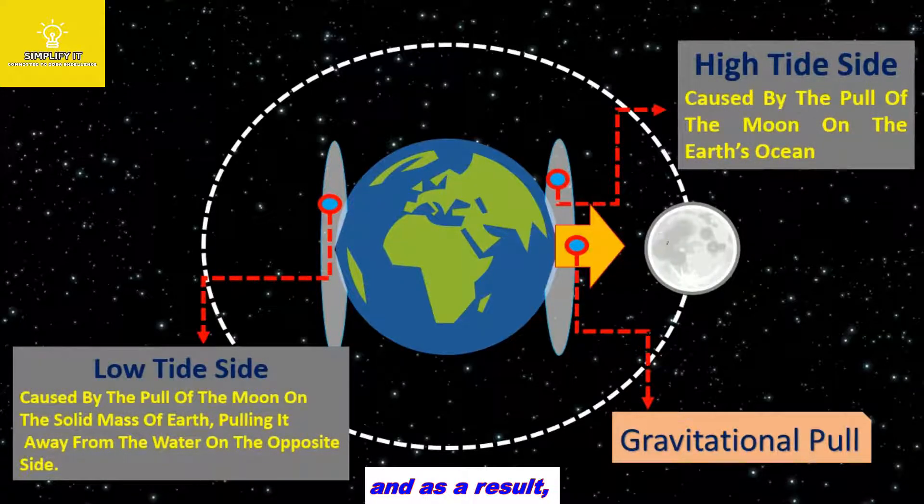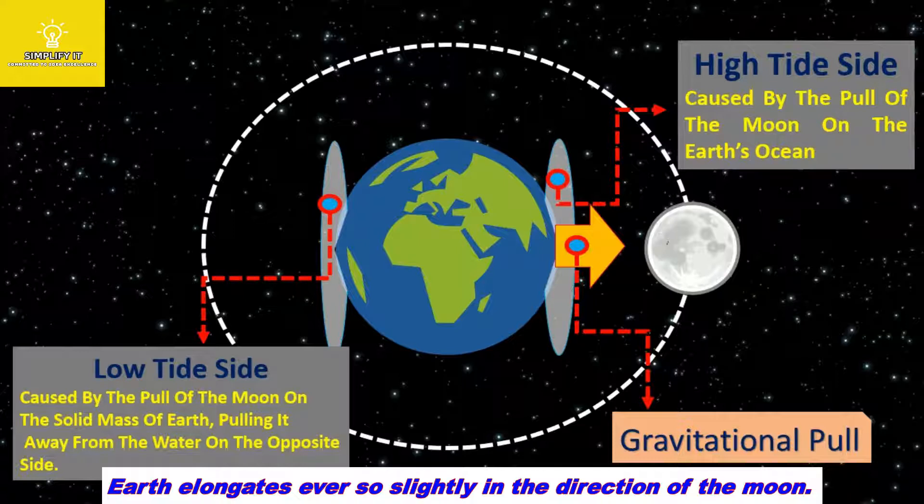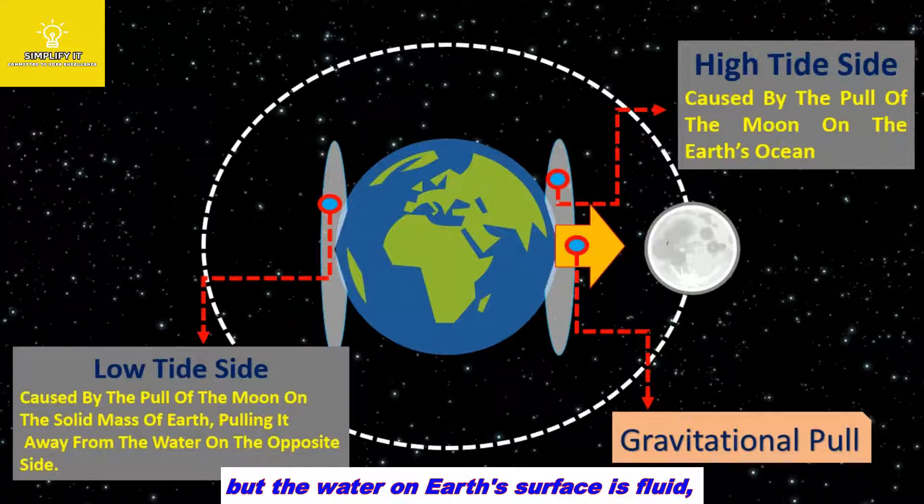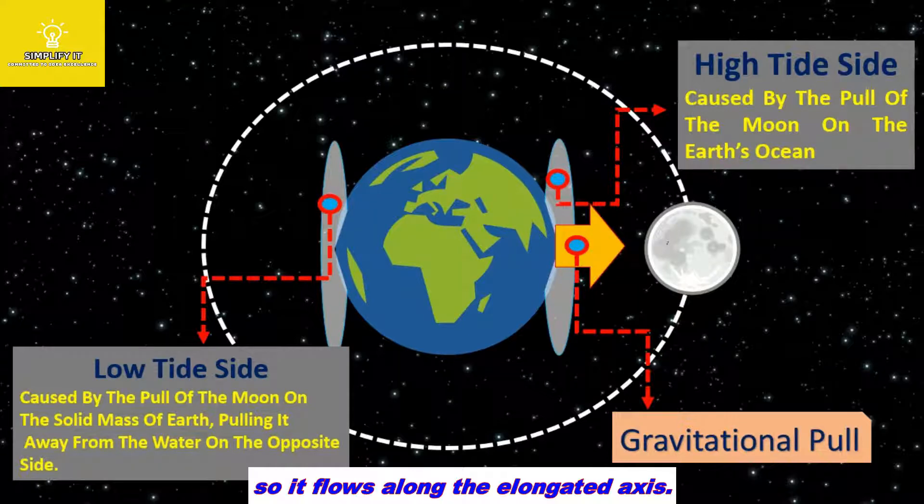And as a result, Earth elongates ever so slightly in the direction of the moon. The land is sturdy, so it doesn't move much. But the water on the Earth's surface is fluid, so it flows along the elongated axis. That's the tidal interaction, he said.